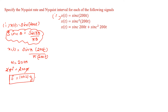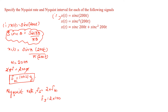Once we know f = 100 Hz, we can apply the Nyquist rate formula. The Nyquist rate is given by fs = 2 × fm. Here fm = 100 Hz, so fs = 2 × 100 = 200 Hz.